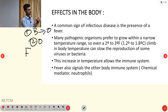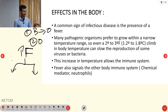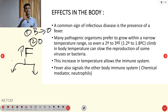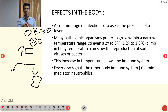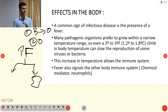Fever or pyrexia occurs. The elevated temperature acts like a double-edged sword: it impairs the organism's cell reproduction and growth while also signaling to other immune system components, activating chemical mediators and neutrophils. However, the increased temperature also damages the host's organs, particularly the brain.